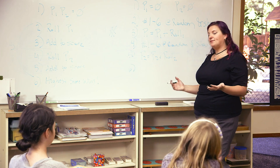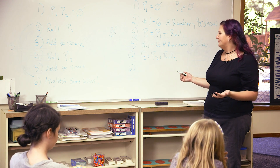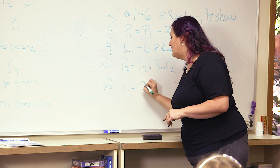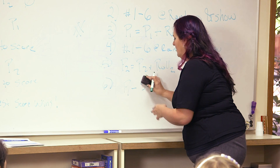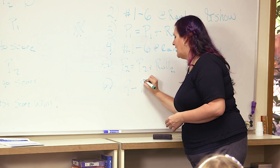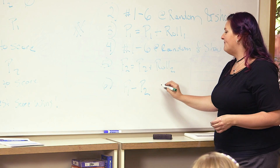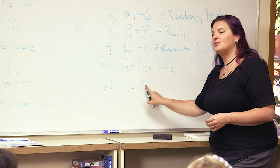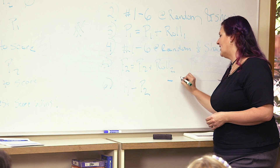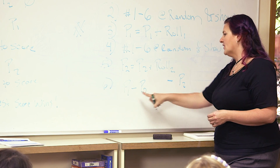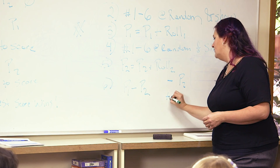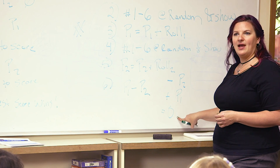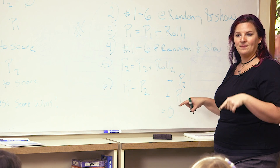Whichever number is highest — you have to figure out which number is highest. So subtract P1 minus P2. If it's a negative number, that means P2 was bigger and P2 wins. If it's positive, then player one was bigger, so player one wins. And if it's equal to zero, then it's a tie.